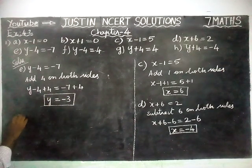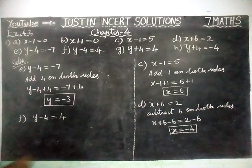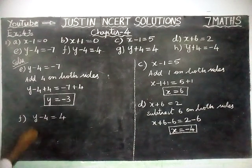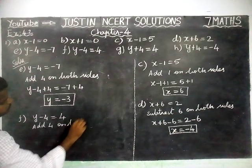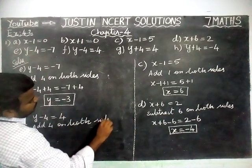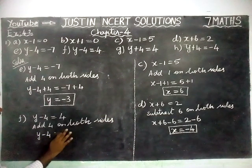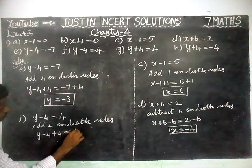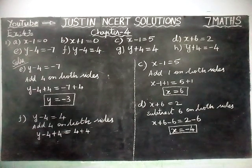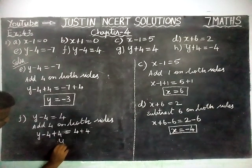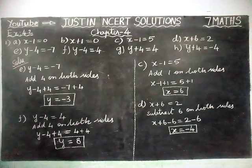Next option F: y minus 4 is equal to 4. We have to cancel this minus 4, so again we are going to add 4 on both sides. y minus 4 plus 4 is equal to 4 plus 4. Minus 4 plus 4 gets cancelled, so y equal to 4 plus 4 equal to 8. The value of y is equal to 8.